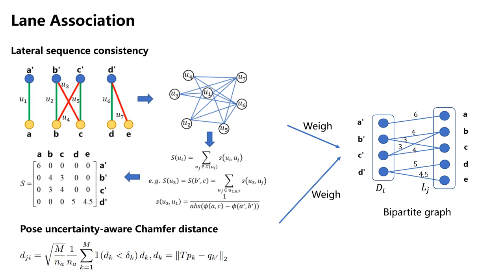In the graph, each node represents a matching relationship, rather than a lane marking itself. If the lateral order relationship of the two lane markings represented by two matching relationships is the same, there will be an edge between the corresponding nodes, and the edge weight depends on the consistency of the lateral order. Finally, we sum up all the edge weights to obtain the weight of the matching relationship corresponding to each node. Ultimately, we solve the bipartite graph based on these two weights.